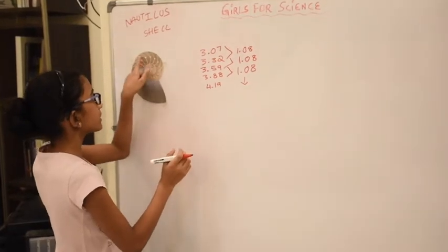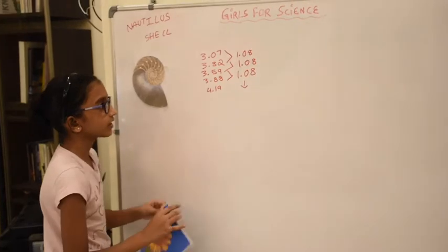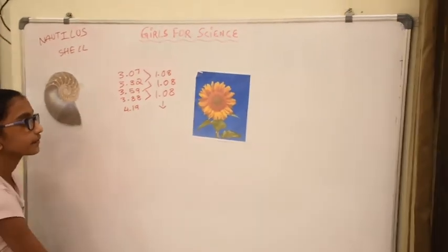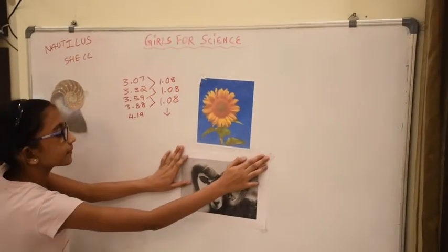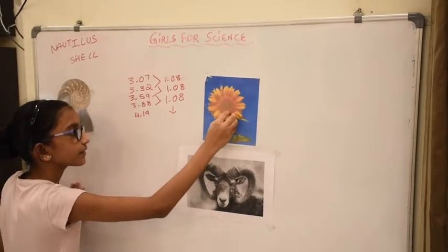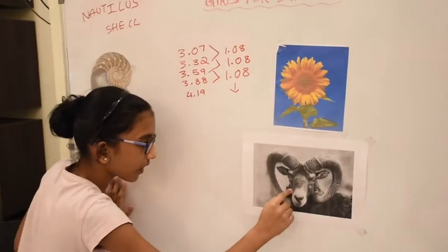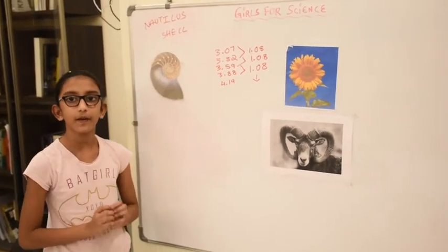This spiral as you can see in the nautilus shell is also seen in nature such as it's seen in sunflowers and it's also seen in rams. So, the sunflower has a spiral in the middle of the seeds and the ram has a spiral in its horns. And this spiral is seen everywhere in nature.